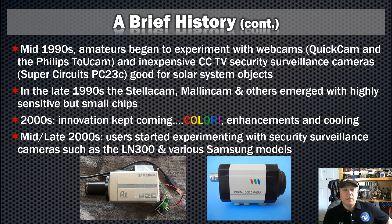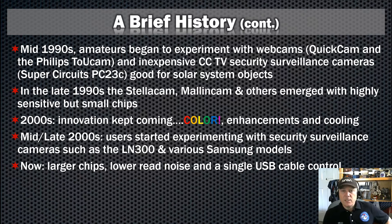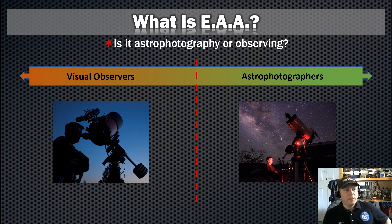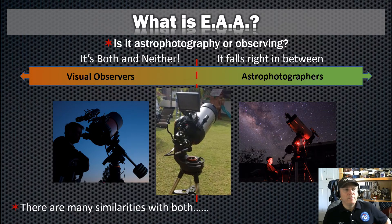By the mid to late 2000s, users started experimenting with security surveillance cameras such as the LN300 and various Samsung models, and this continued well into the early 2010s. So what is EAA? Oftentimes you'll hear people refer to it as a type of imaging, or is it observing? The reality is that it actually falls pretty much into both camps — it is both imaging and observing, but it's also neither. It falls very well in between the two, and you can almost think of it as a bit of a continuous spectrum.